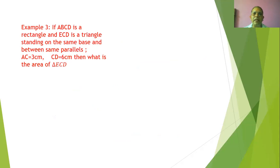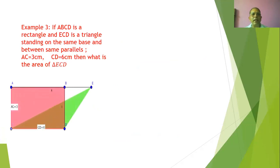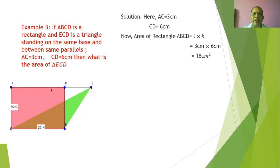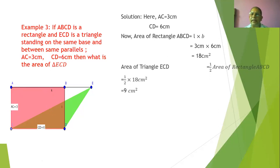Number three: ABCD is a rectangle and triangle ECD is standing on the same base and between the same parallels. AC = 3 cm and DC = 6 cm. Find the area of triangle ECD. Area of rectangle = length × breadth = 3 × 6 = 18 cm². Since the triangle is half the rectangle: area of triangle = 1/2 × 18 = 9 cm².